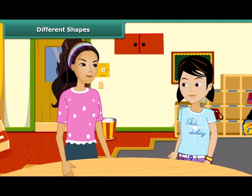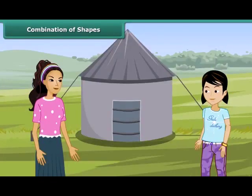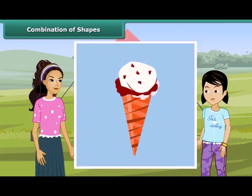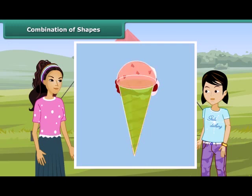Wow, Rita, you are learning so fast! Tell me more about these shapes. Look at this tent — this is made up of two shapes. Can you tell the name of the shapes? Yes, one is a cone and another is a cylinder. Similarly, we have ice cream — we can see that it is a cone surmounted by a hemisphere.